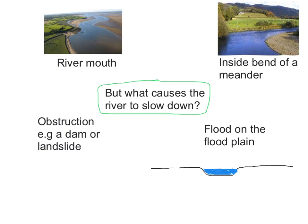So what exactly causes the river to slow down in the first place? I'm going to explain four reasons why this might happen. The first is at the river's mouth. This is where the river meets the sea, and the river is naturally forced to slow down and deposit anything that it is carrying.